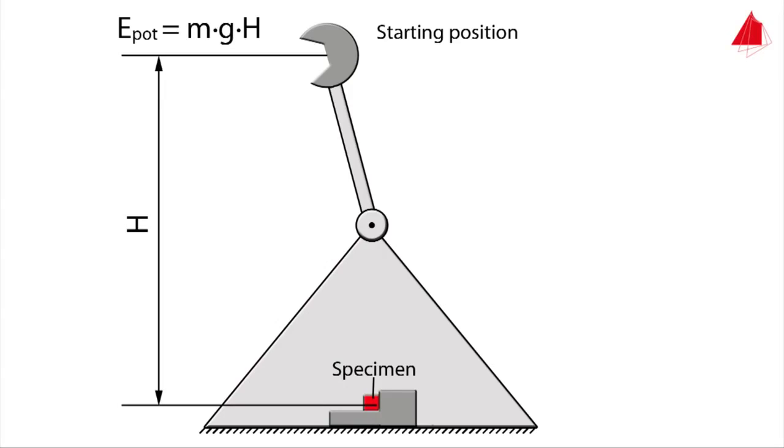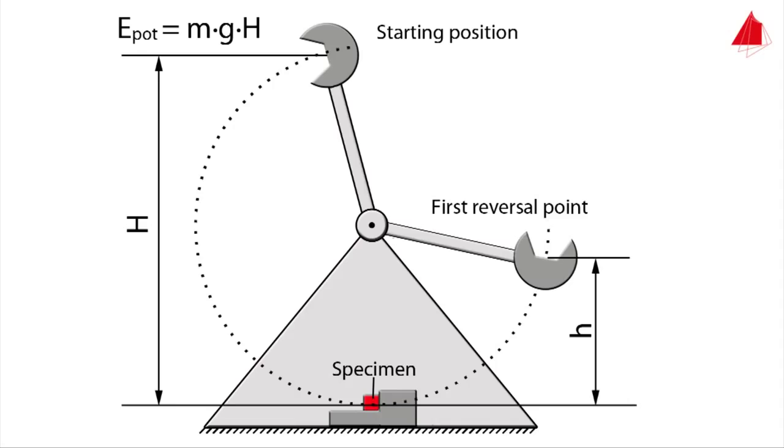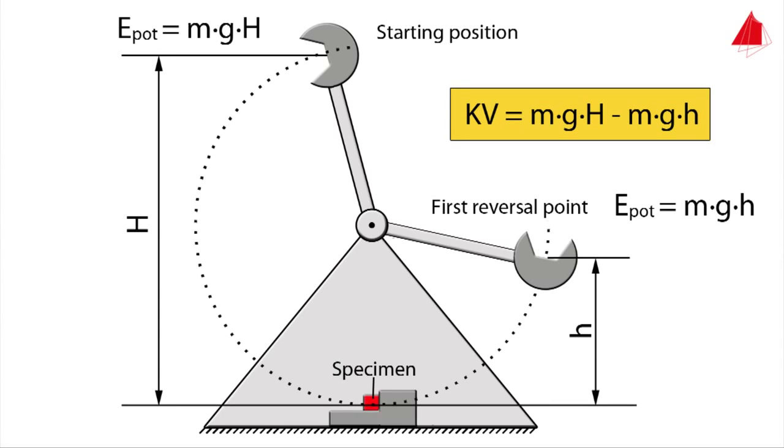After the pendulum has been released the hammer moves downwards, hits the specimen and then only swings to height small h. Exactly at the first reversal point the pendulum again only has potential energy, which is m times g times small h. The energy that has been absorbed by the specimen is called notch impact energy KV. It corresponds to the difference between the two potential energies.